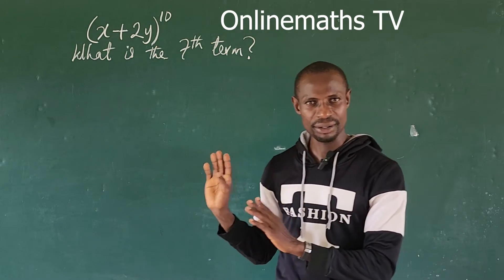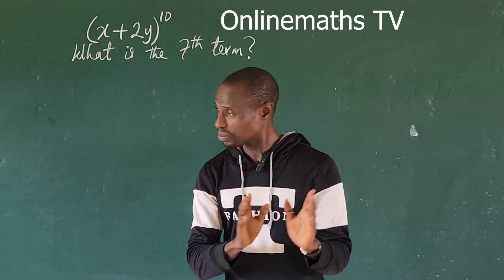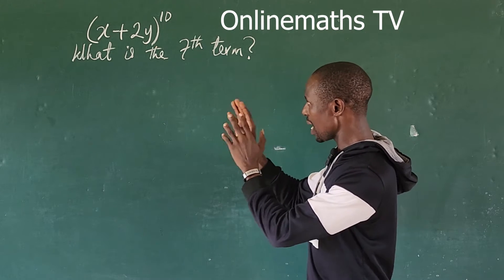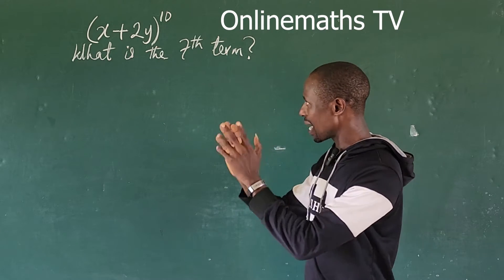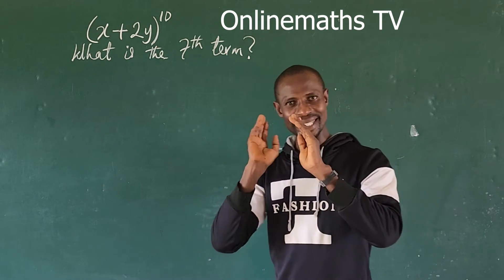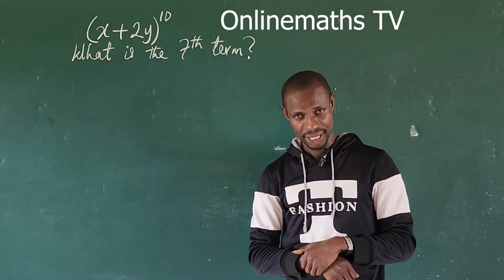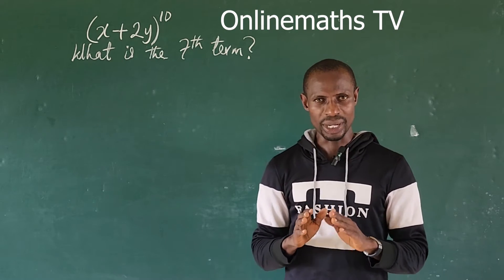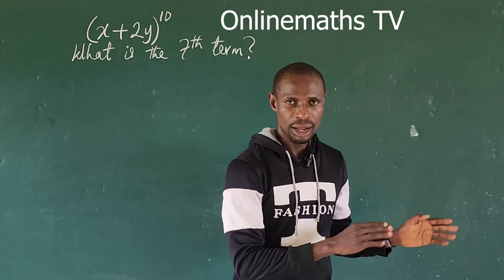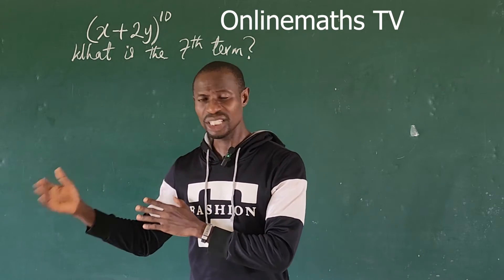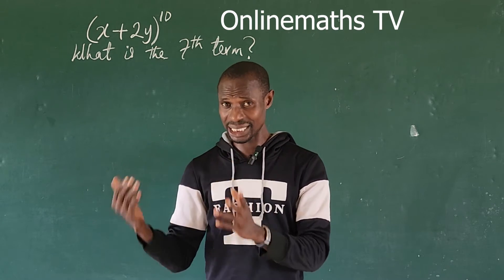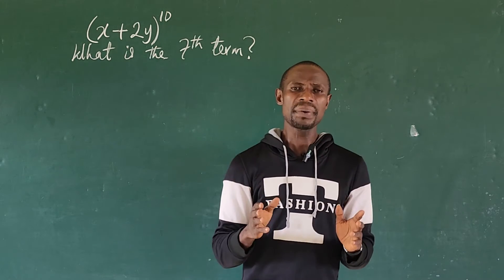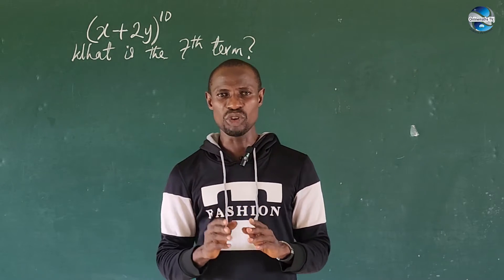So we all know that if we have to expand this question, it means we're going to have (x + 2y) times (x + 2y) times... to the tenth term. Now there are two methods we can use to solve this. We can use the binomial expansion or we can use the continuous multiplication process. But the continuous multiplication process will take a lot of time and you might make mistakes if you're not good at what you do. So what happens here, we're going to use the binomial expansion.